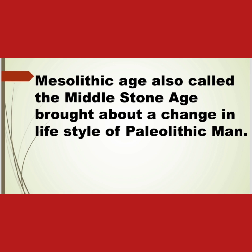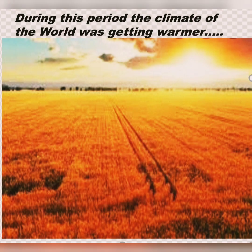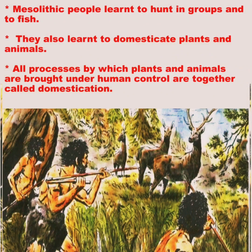The Mesolithic age was also called the Middle Stone Age, and it brought about a change in the lifestyle of Paleolithic man. During this period, the climate of the world was getting warmer. Mesolithic people learned to hunt in groups and to fish. They also learned to domesticate plants and animals.